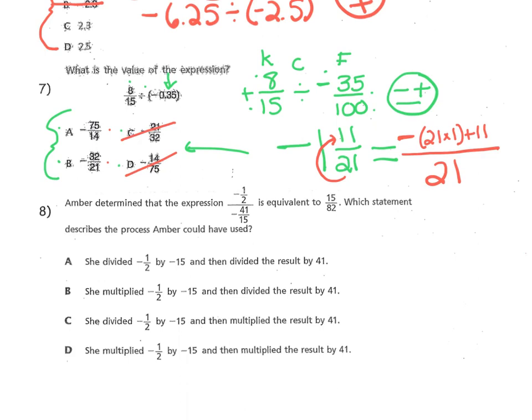Let's take a look at number 8. I'm going to change things up and cross off the choices. We're just going to look at this division problem and do it the old school way. It says, Amber determined that the expression negative 1/2 divided by negative 41/15ths is equivalent to 15/82. Well, remember, this is just a complex fraction. And if I were to write it as a division problem, it would be negative 1/2 divided by negative 41 over 15.